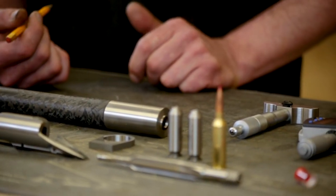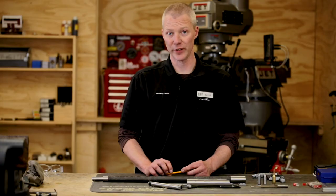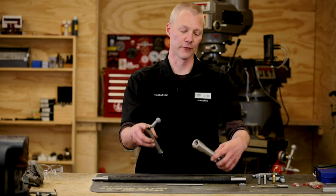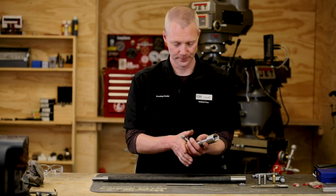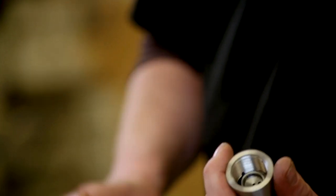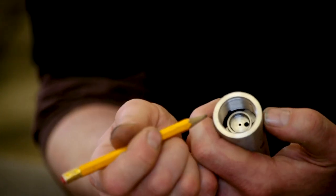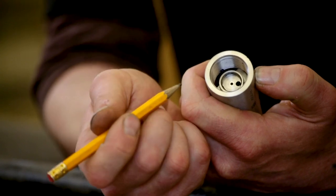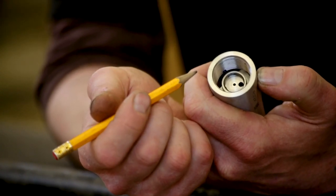To establish the dimensions required to fit the barrel to the receiver, we're going to have to take some measurements off the bolt and the receiver. The first measurement I'm going to do will be from the receiver face to the bolt lug. This will establish the length of the thread tenon for the barrel.